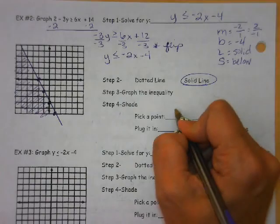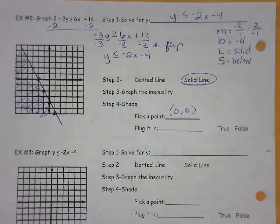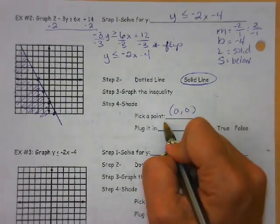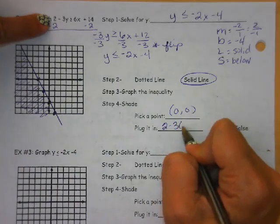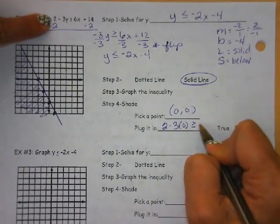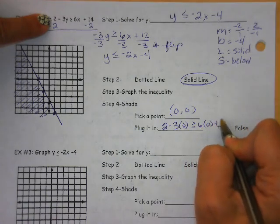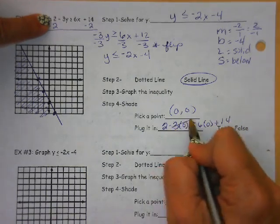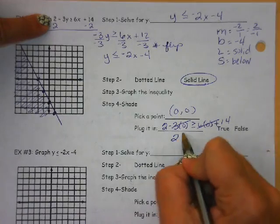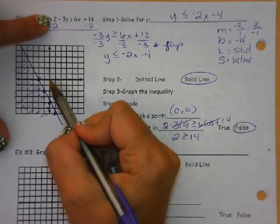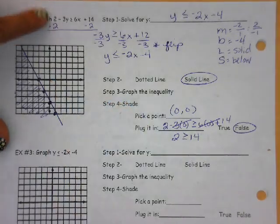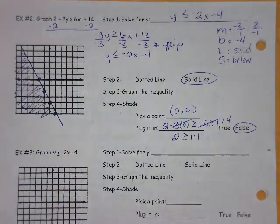Again, pick a point. We can pick the origin. It is not on our line. Plug it in, and when we plug it in, plug it into this original. 2 minus 3 times 0 is greater than or equal to 6 times 0 plus 14. That goes away. That goes away. 2 is greater than or equal to 14. Well, no, that is false. So the origin should not be shaded because it is not a solution.